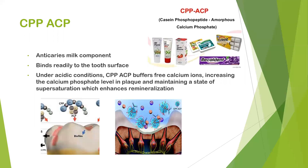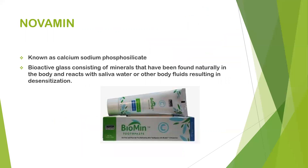Regarding CPP-ACP: casein is a well-known milk component which has shown anti-caries properties. It binds readily to the tooth surface and under acidic conditions it buffers free calcium ions, increasing the calcium phosphate level in plaque and maintaining a state of supersaturation, which enhances remineralization. Commercially available products based on CPP-ACP paste include GC Tooth Mousse, Recaldent, and MI Paste.